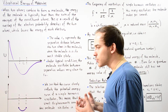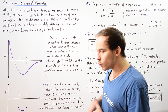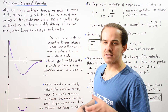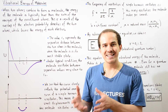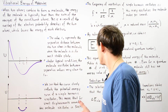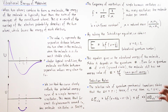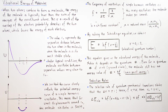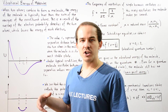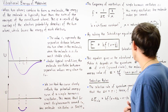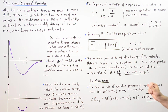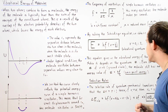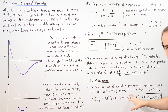Whenever electrons undergo transitions in quantum mechanics, we use a set of rules known as selection rules to determine which transitions are allowed and which are forbidden. The selection rule for vibrational quantum mechanical electron transitions states that the change in the vibrational quantum number V can only be plus one or minus one. So an electron can never jump from, say, V equals zero to V equals five because the delta V would be greater than positive or negative one. If initially the electron is in vibrational quantum state V, then the final V must be either V plus one or V minus one.